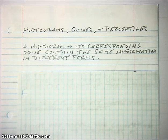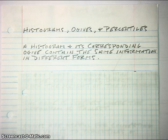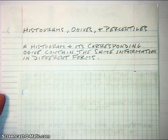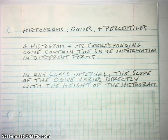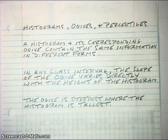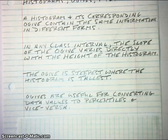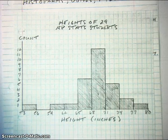A histogram and its corresponding ogive contain the same information in different forms. Anything the histogram might tell you about the shape of a distribution of quantitative data, the ogive could also tell you. That's because the slope of the ogive is directly related to the height of the bars in the histogram. In any class interval, the slope of the ogive varies directly with the height of the histogram. Basically, the ogive is steepest where the histogram is tallest, so anything the histogram tells you about the shape of the distribution, the ogive can also tell you.